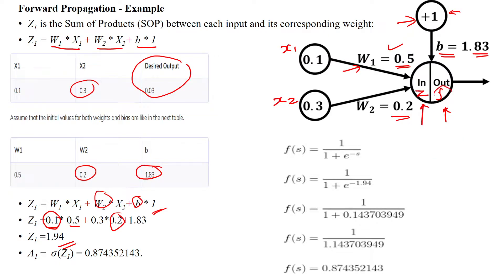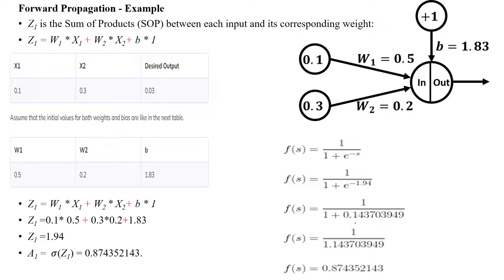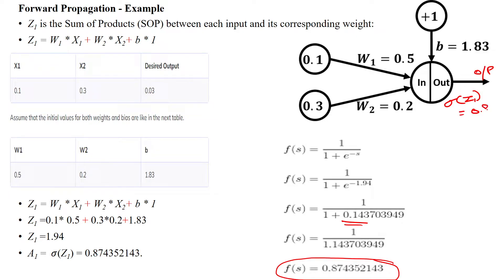Then you have to apply the activation function — the sigmoid function. The sigmoid is 1 divided by (1 + e^(−G)), where G is 1.94. When you apply that, you finally get 0.874, which is the output of this neuron: σ(G1) = 0.87.